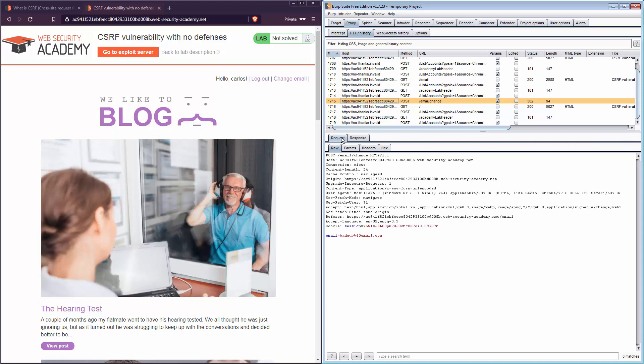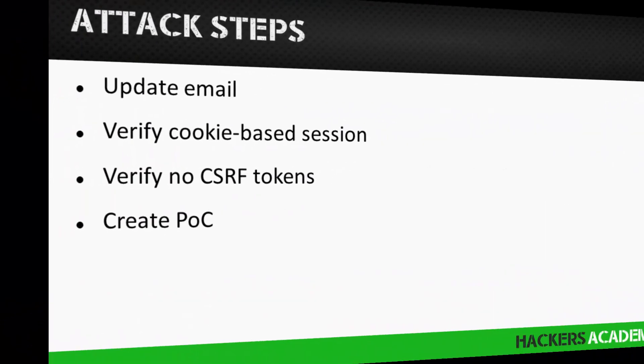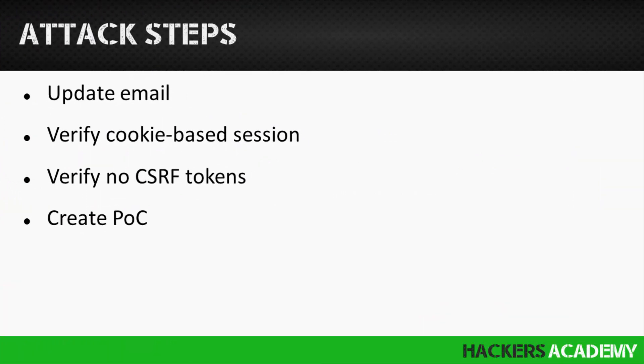The reason I showed you how to do this with Repeater is that it makes the process much faster. Instead of going back to the change email functionality and intercepting each request — changing the email, the token, the cookie — things we'll be doing in future videos — I can do all of that from Repeater directly. So now we have confirmation our attack works: a relevant action (change email), a cookie-based session, and a request with no unpredictable parameters.